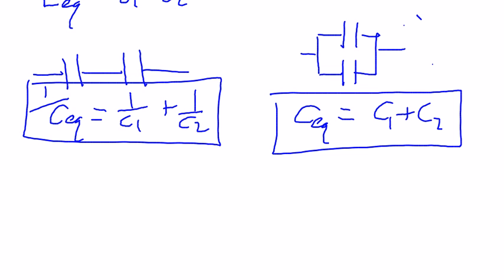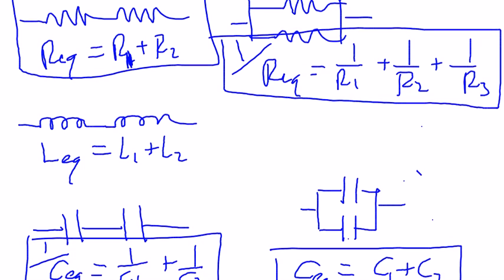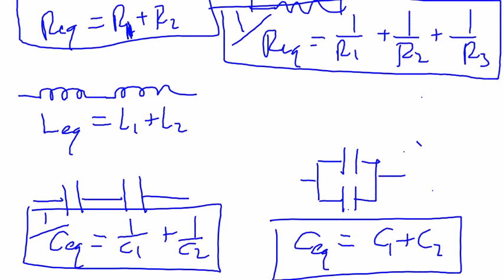And be careful of the formulation. 1 over C equivalent equals 1 over C1 plus 1 over C2. Sometimes a simplified version of this, for example, with the resistors, when you add them in parallel, well,